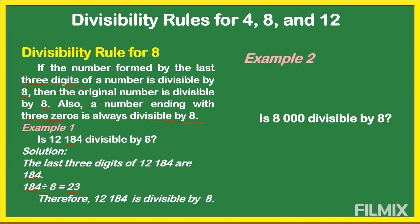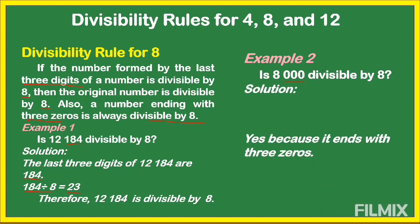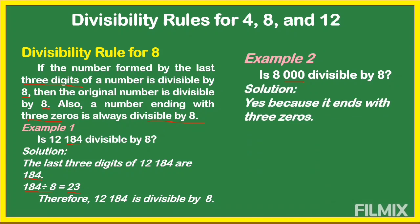Another example: is 8,000 divisible by 8? Yes, because it ends with three zeros. A number ending with three zeros is always divisible by 8.